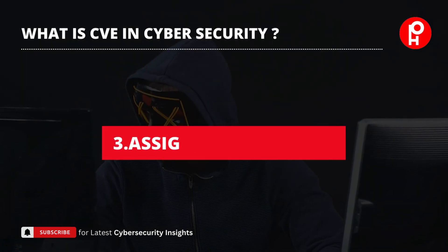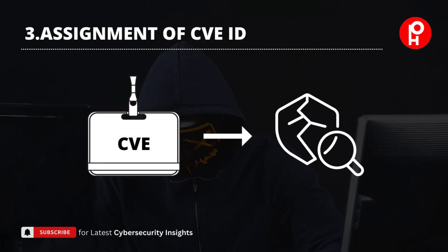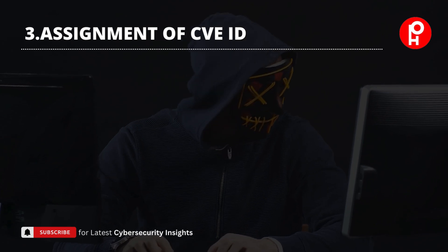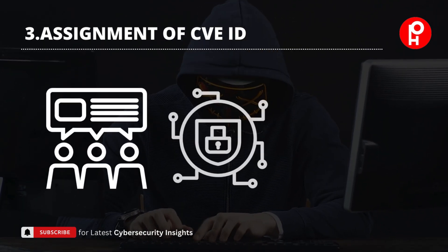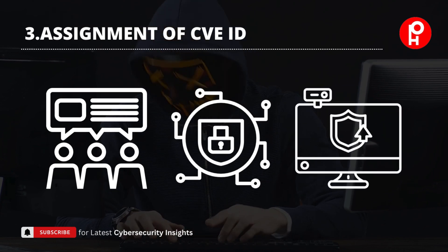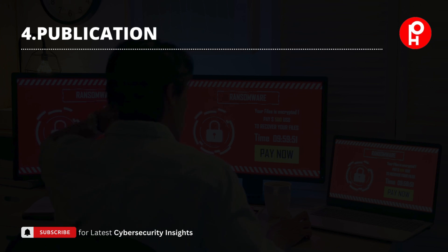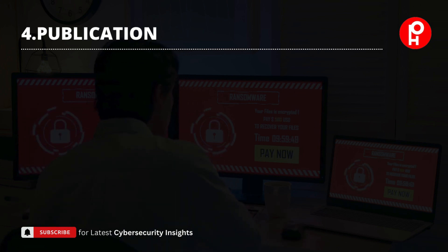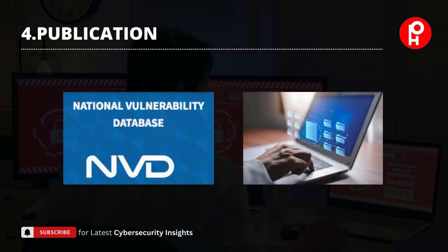Next is Assignment of CVE ID — a unique CVE ID is assigned to the vulnerability, and this identifier is used to reference the vulnerability in public discussions, security advisories, and software updates. Next is Publication — the CVE entry is published in the National Vulnerability Database, also known as NVD, and other security databases and repositories.